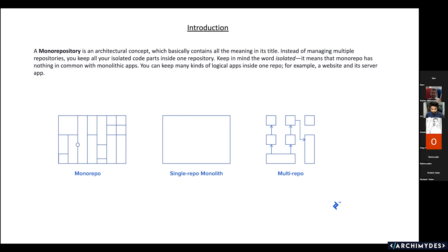Let's say I have a backend application that consists of a typeface. Now the same typeface has to be used by the frontend application as well. So for that, we don't have to rewrite this. By developing using monorepo, we can use the typeface that has been developed by the backend application in the frontend as well. That is the concept of monorepo.